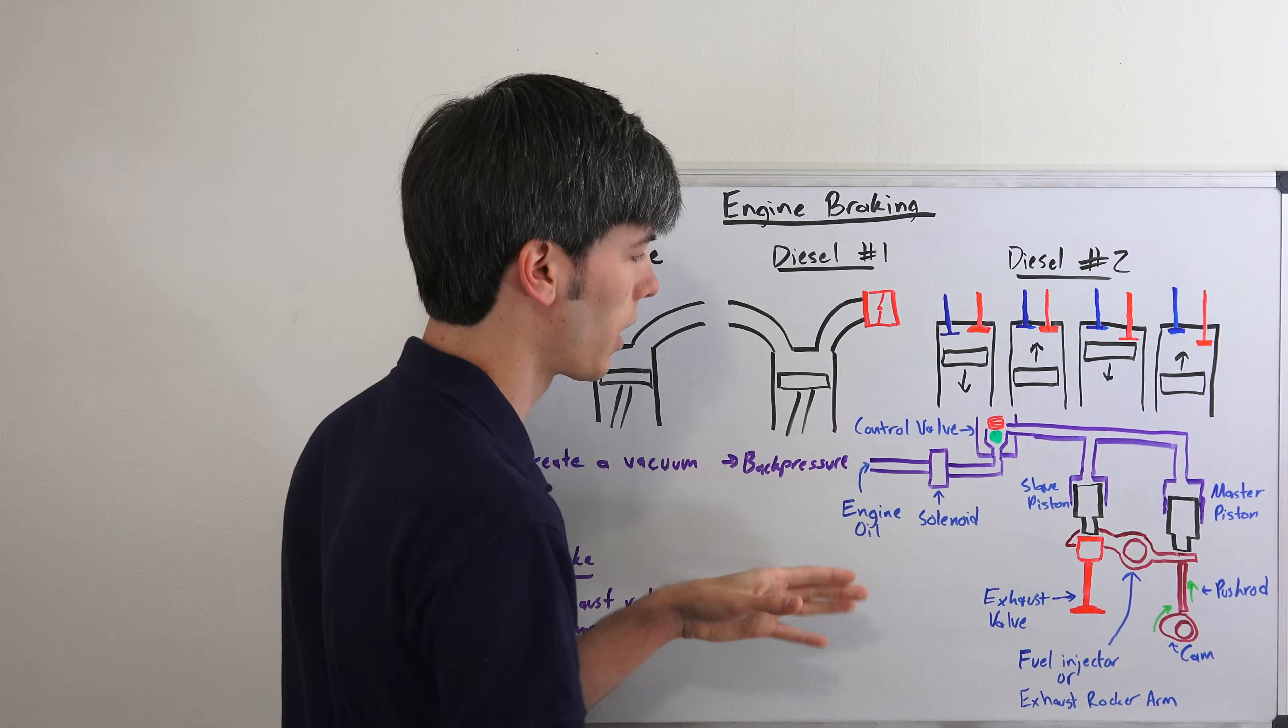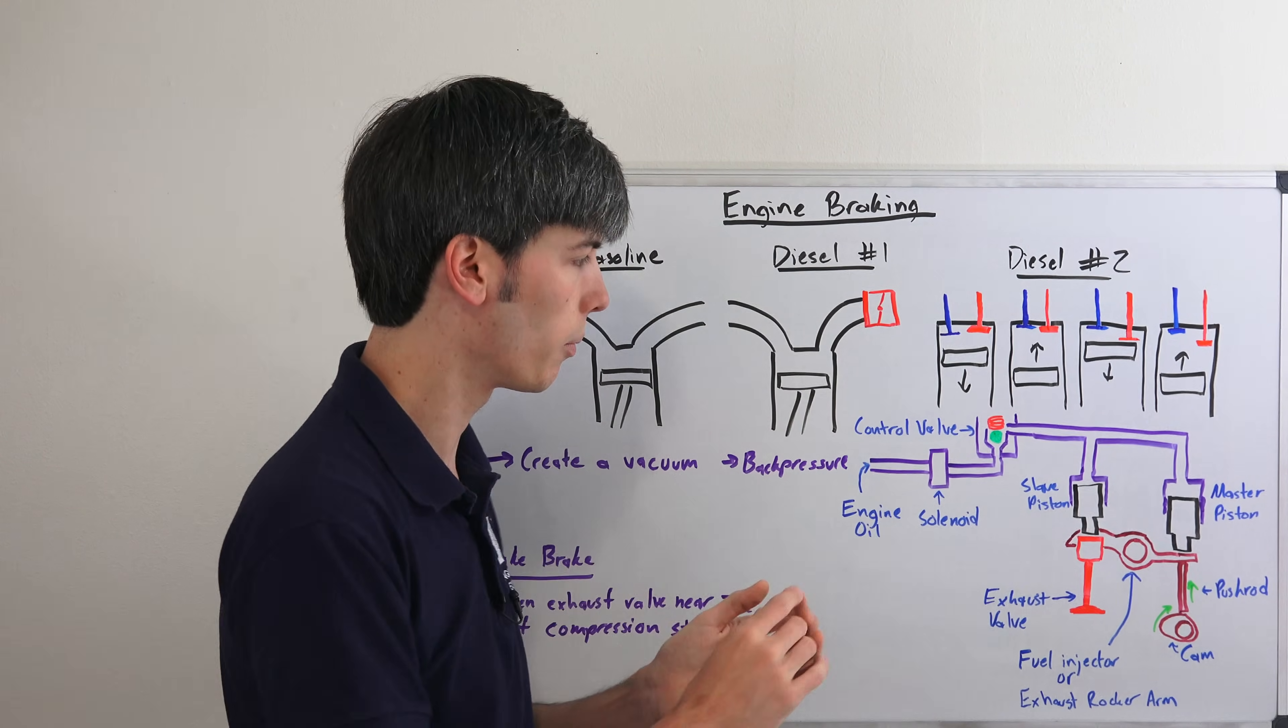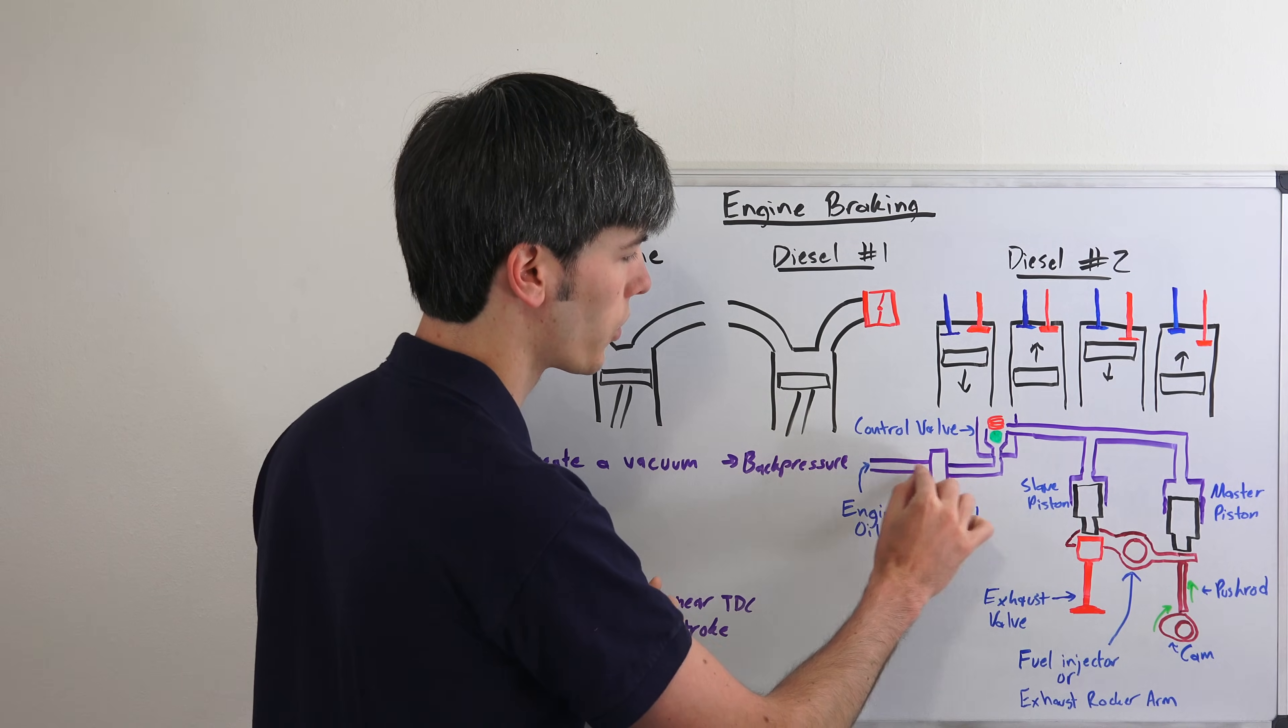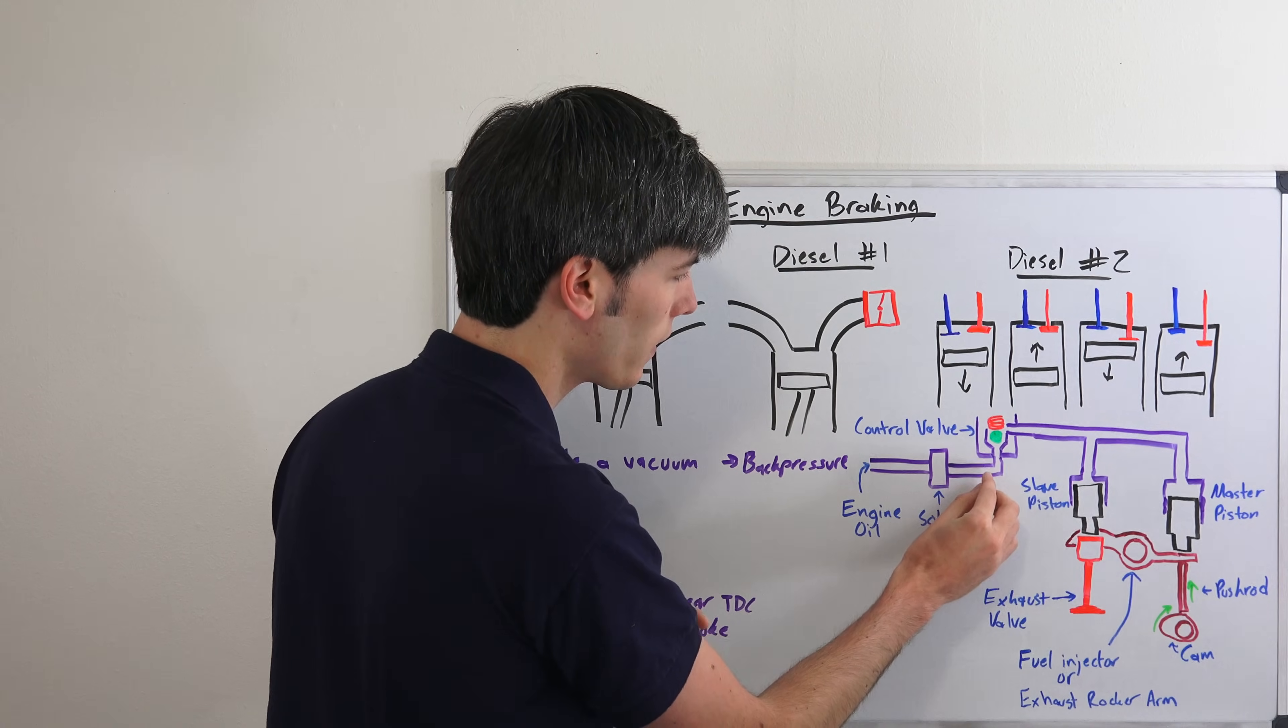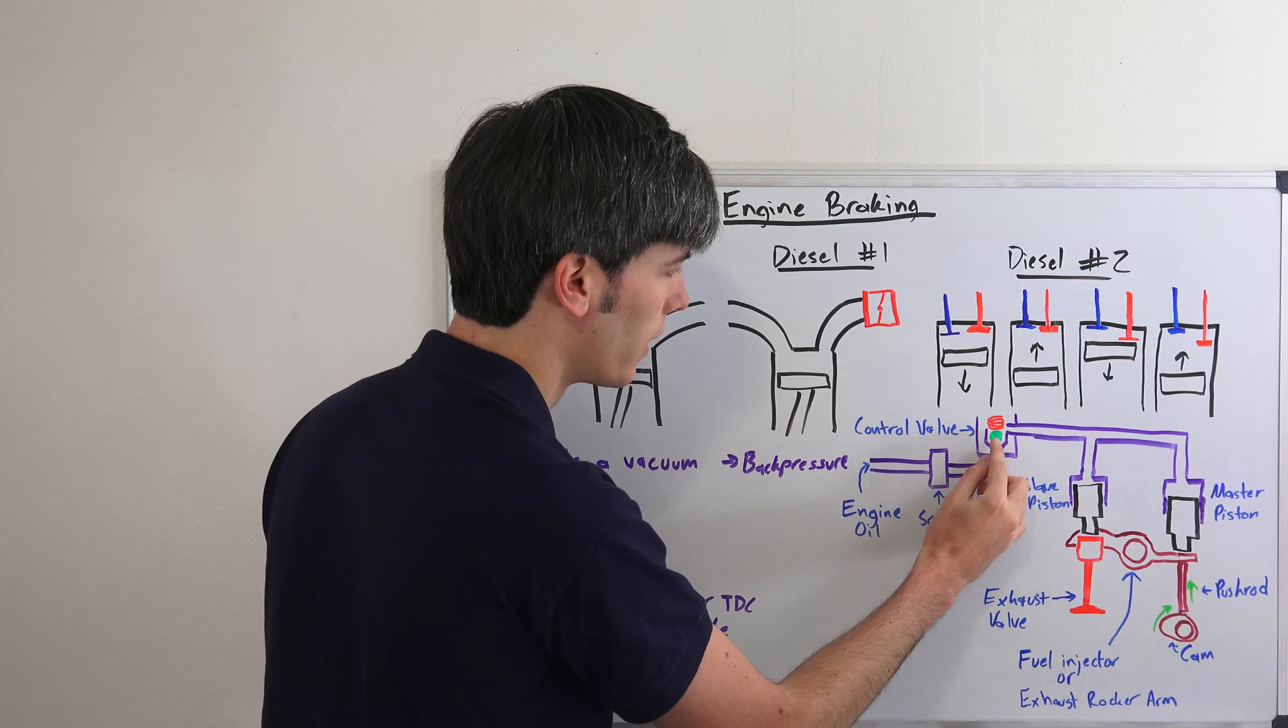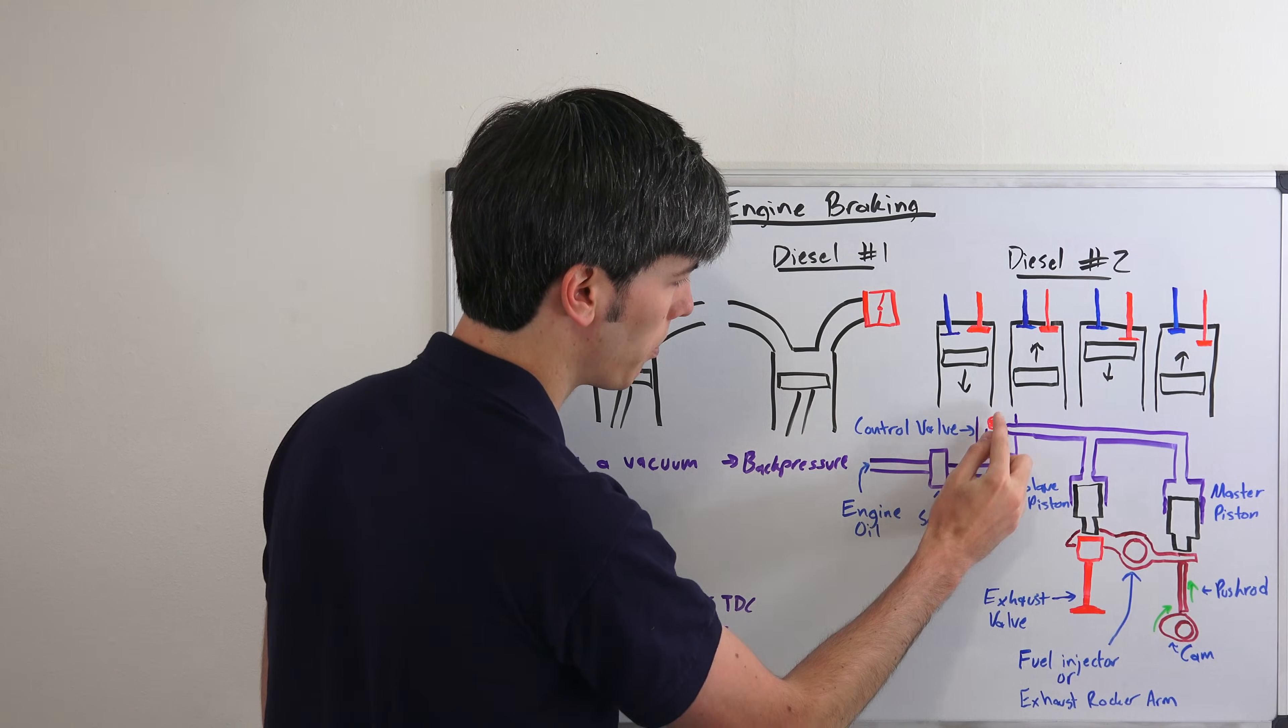You have your engine oil which is going to come in that's pumped in by the engine oil pump. You've got a solenoid which controls the flow of that engine oil into this system. So that'll open up allowing oil to flow in here. That oil is going to come into this control valve and there's this ball right here which it's going to push up.